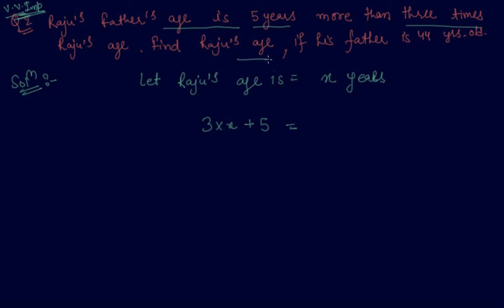Find Raju's age if his father's age is 44 years. So I know the value of Raju's father's age, so now our equation becomes 3x plus 5 is 44. Students, please keep that in mind, this is one of the typical questions which might come in the exam.